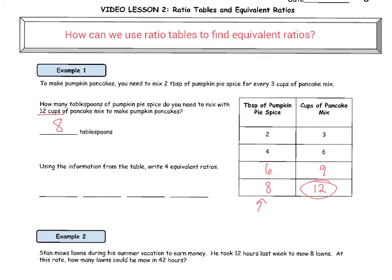Using the information from the table, write four equivalent ratios. We knew that the original ratio was two to three, but we also found three other ratios that are equivalent to two to three, and those are four to six, six to nine, and eight to twelve. Those are four equivalent ratios. We can see the relationship between these equivalent ratios using repeated addition. Two plus two is four, plus two is six, plus two is eight. So for every time that we add two, we have to add three cups of pancake mix, and that ratio remains constant all the way through.